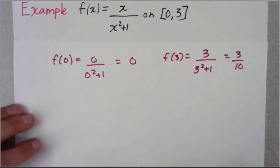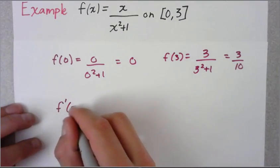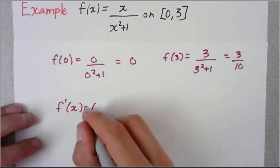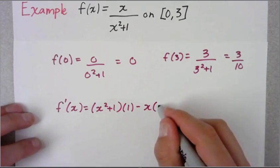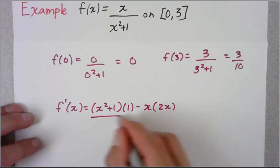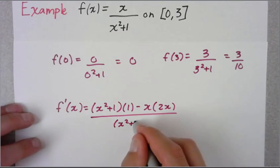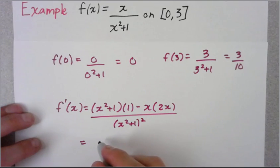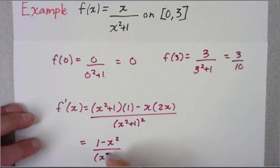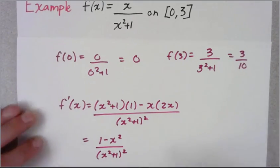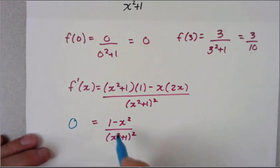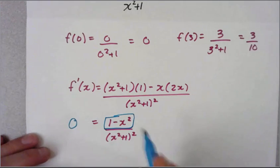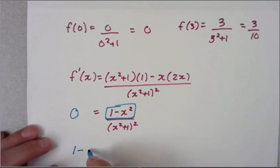I take the derivative, which is going to be a quotient rule. So I take bottom times the derivative of the top minus top times derivative of the bottom, all over bottom squared. This simplifies to (1 - x²)/(x² + 1)². We're going to set this equal to zero. The only way to make a fraction zero is make the numerator zero, so you have 1 - x² = 0.